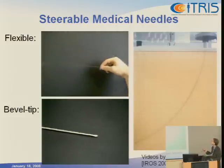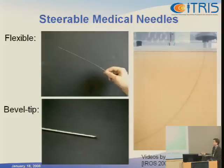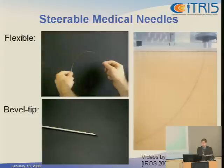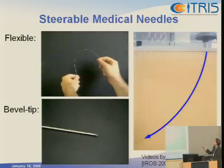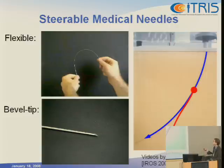We can see in the image on the right that when this needle was inserted into an artificial tissue phantom, it followed this curved path — I can highlight the path there in blue. If we instead decide to insert the needle and then at some point rotate the base by 180 degrees, because the needles are torsionally stiff even though they're flexible, this will change the direction that the bevel points, and we can follow a path with a curve radius of curvature in the opposite direction.